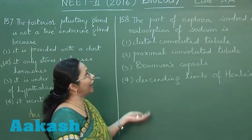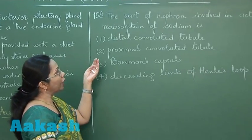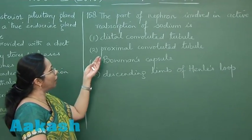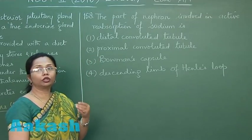Now the next question, 158: The part of the nephron involved in active absorption of sodium. Now here, active absorption of sodium occurs maximally in the proximal convoluted tubule, and it is obligate reabsorption.